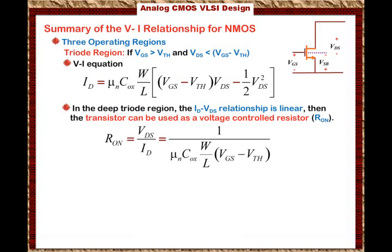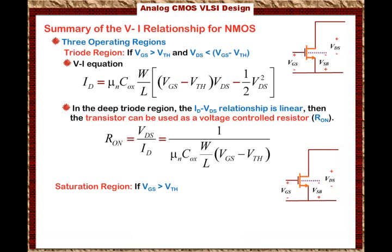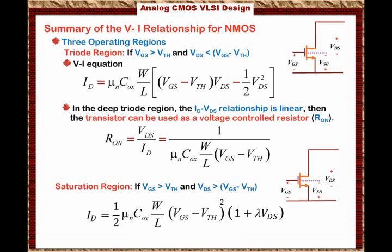The PMOS transistor has similar properties as well. The third region is the saturation region. The conditions are: VGS greater than the threshold voltage, and VDS greater than VGS minus the threshold voltage. Then ID = ½·μN·COX·(W/L)·(VGS − Vth)² × (1 + λ·VDS). Here we include the channel modulation effect λ, which says that as VDS increases, the effective channel length becomes shorter, yielding higher current for the same VGS. This is called the channel modulation index.